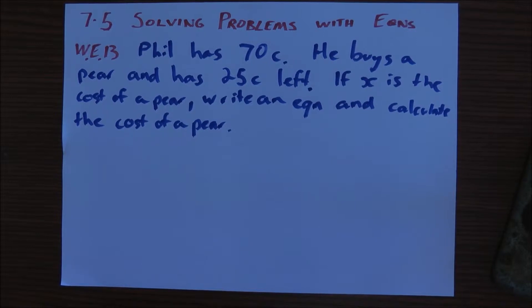Phil has 70 cents. He buys a pear and has 25 cents left over. If X represents the cost of a pear in cents, form an equation and solve it to find the cost of a pear.